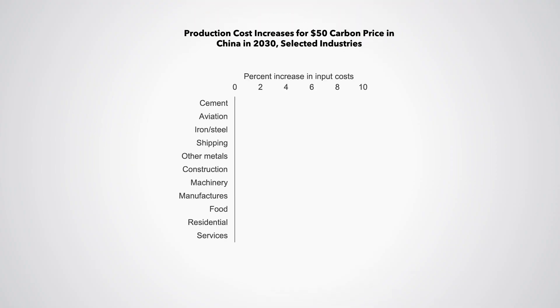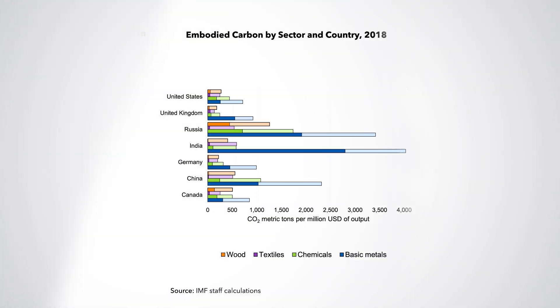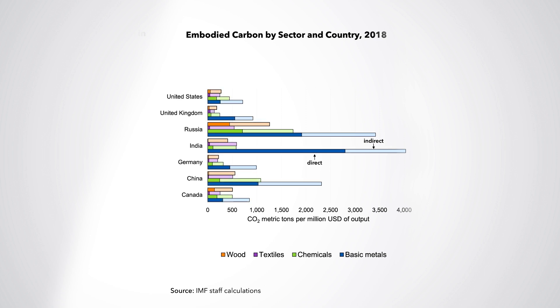These estimates overstate the actual household burden because they ignore the domestic environmental co-benefits of carbon pricing, like fewer air pollution deaths, and revenue recycling, which I'll come back to. On the industry side, carbon pricing significantly increases costs for energy-intensive trade-exposed industries, for example by 15% and 40% for steel and cement respectively, for a $50 per tonne carbon price in China. The absolute cost increases would be broadly comparable in other emerging market economies like India and Russia, as they have relatively high embodied carbon in industrial products, both from their direct fuel combustion and from embodied carbon in their electricity inputs.